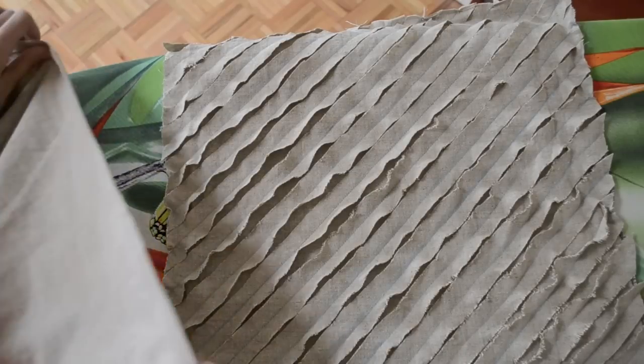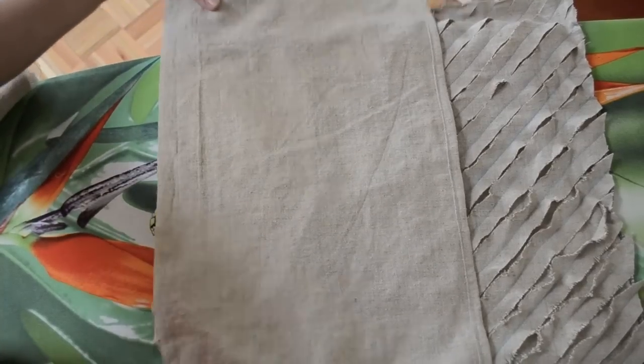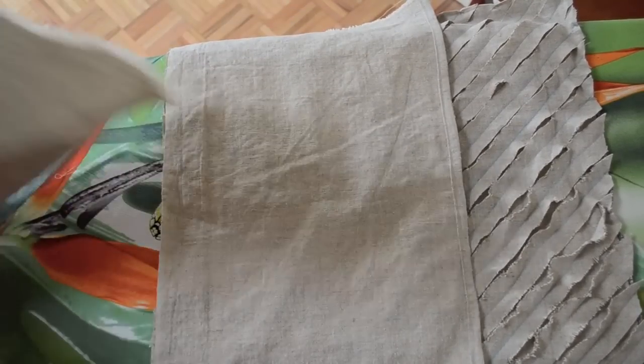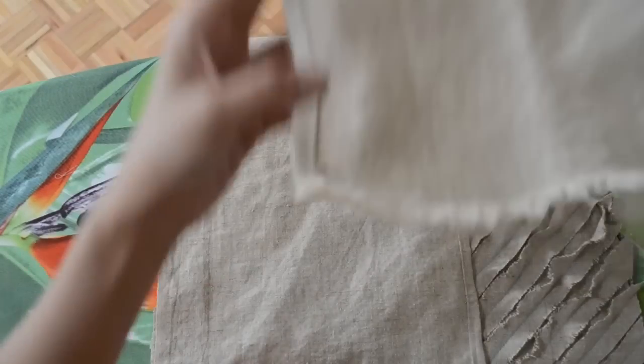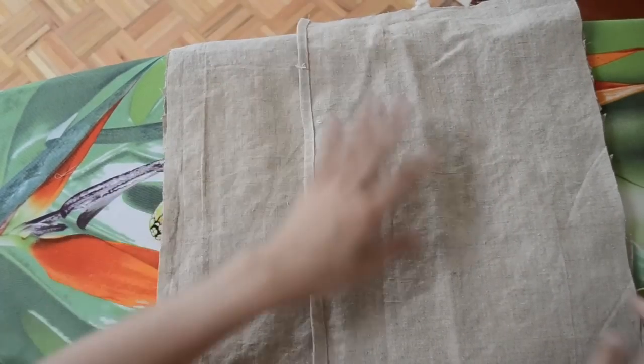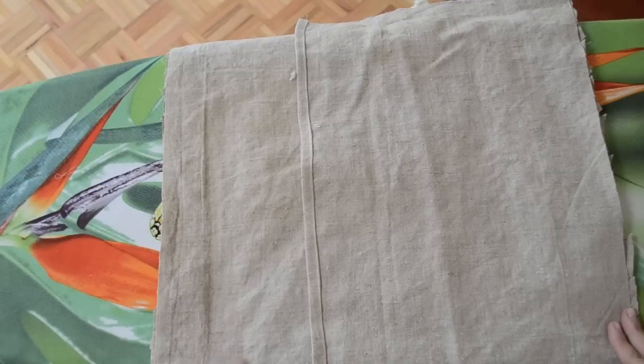So here we have the front panel facing up. And I'm putting the two back panels on top, pretty face facing each other. And I hemmed one side of each of the back panels by the way. And I'm just going to go ahead and sew around to form my pillowcase.